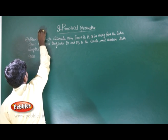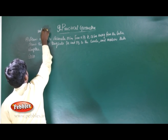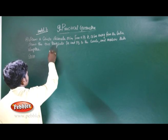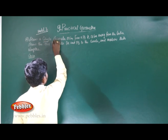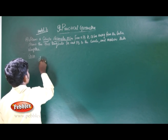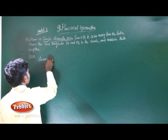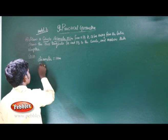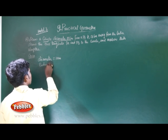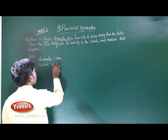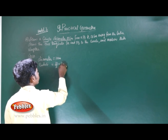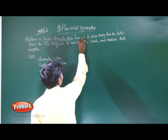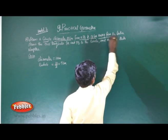Model number 3. Draw a circle of diameter 10 centimetres. Diameter is equal to 10 centimetres, then radius is diameter divided by 2, which is equal to 5 centimetres. From a point P, 13 centimetres away from the centre.